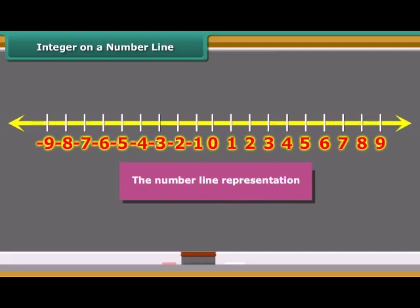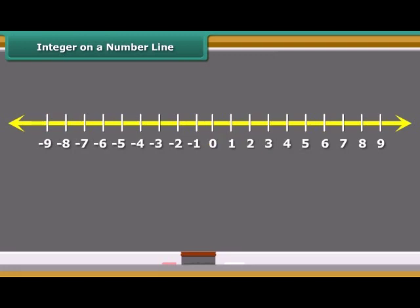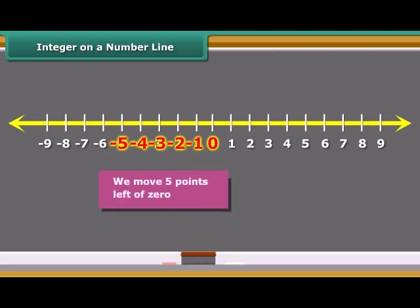To mark plus 2 on the number line, we move two points to the right of zero. Similarly, to represent minus 5, we move five points to the left of zero.